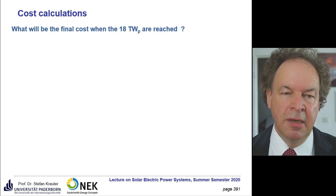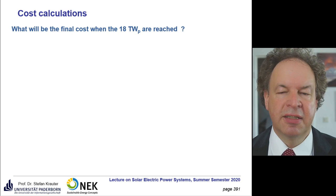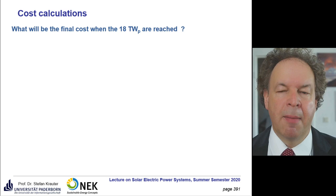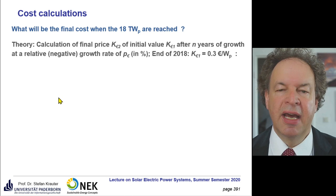A very important issue is the cost. What will be the final cost when the 18 terawatts will be reached? We do not calculate the total cost of the 18 terawatts, but rather for the end consumer — if the aim is reached and you have to substitute some PV panels — how much will the price be then? From the cost regression graph, at the end of 2018 the cost was at 30 euro cents per watt peak.